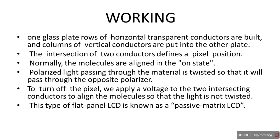In the on state, the molecules are aligned so that polarized light passing through the material is twisted, allowing it to pass through the opposite polarizer. Since one polarizer is horizontal and the other is vertical, the light must be twisted at the intersection to pass through — that is the on state.